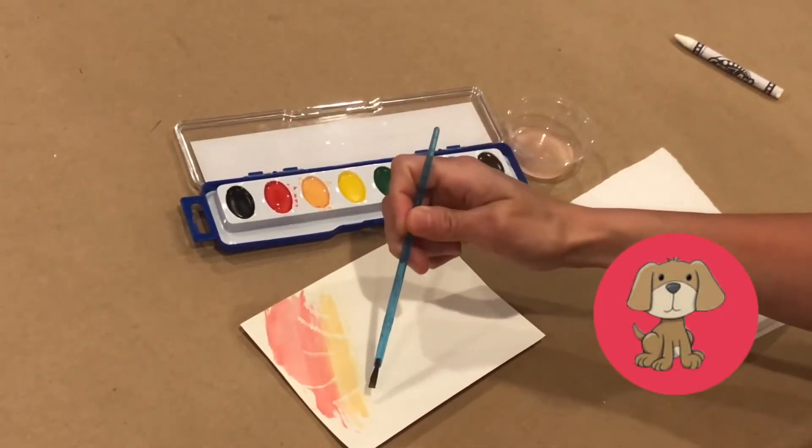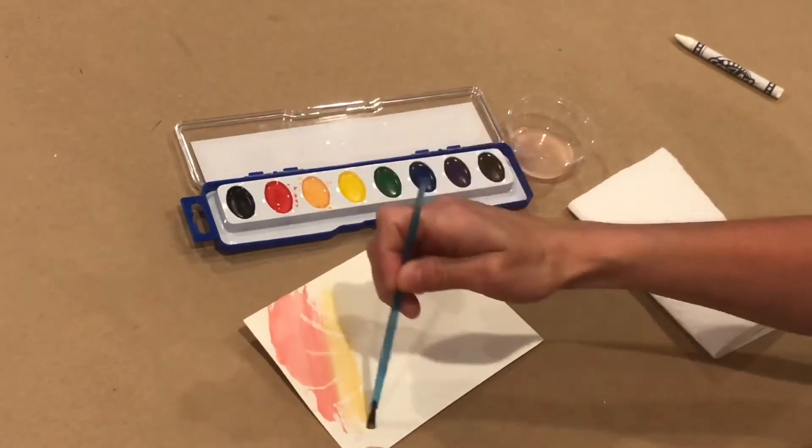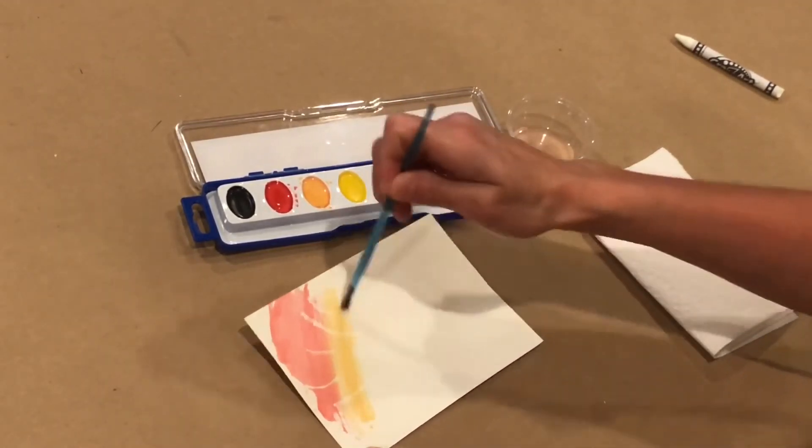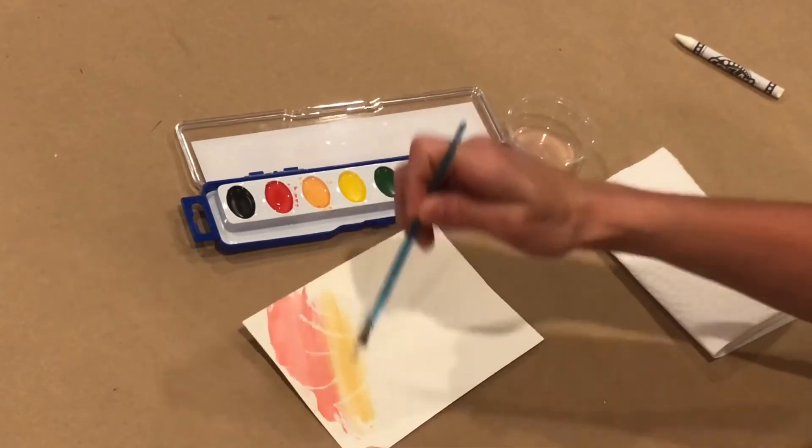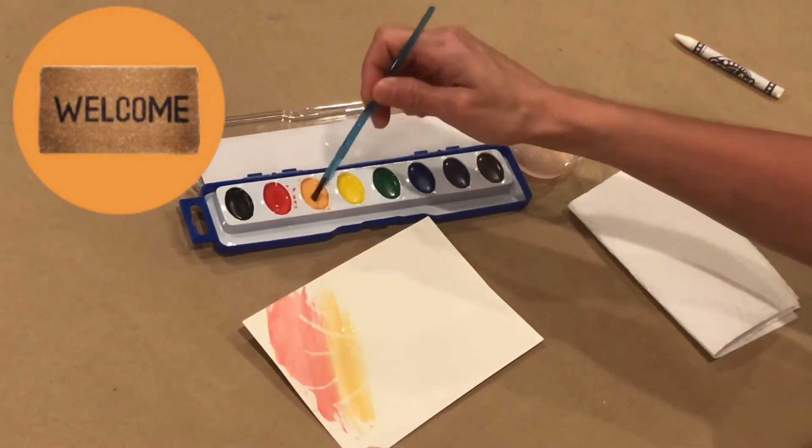When we add the watercolor to the art paper, all the places where you put the crayon markings will not absorb the watercolors. The crayon lines will push the paint away or resist the watery paint.